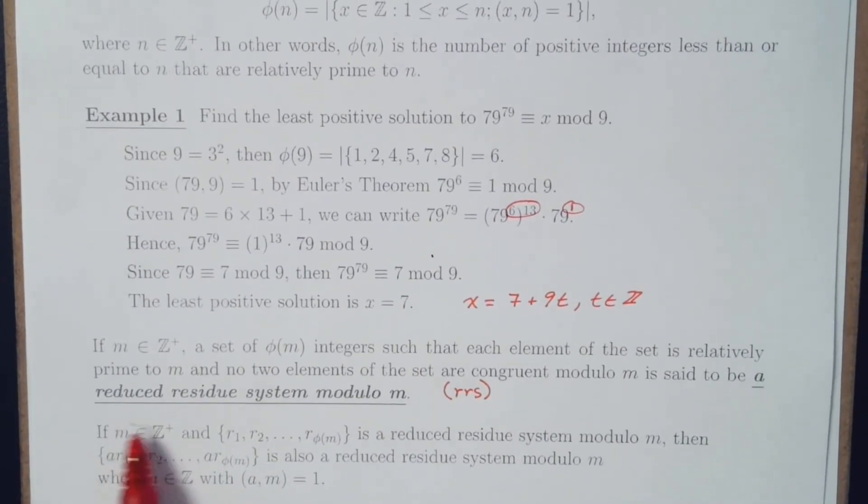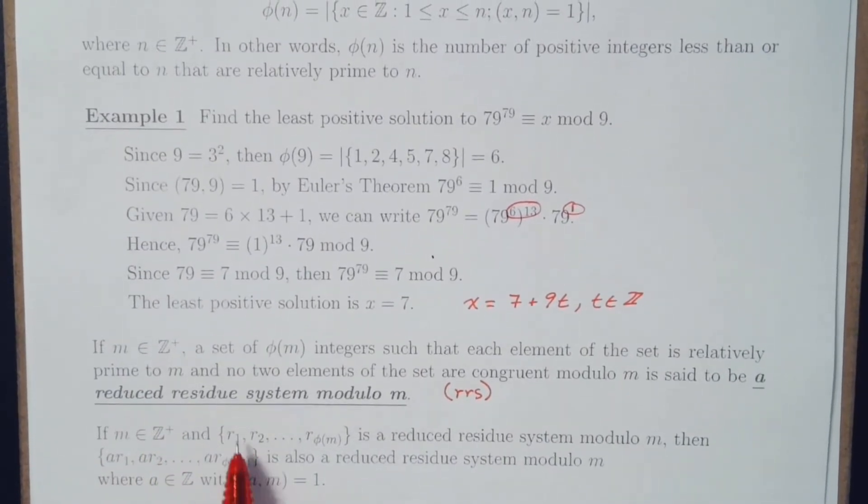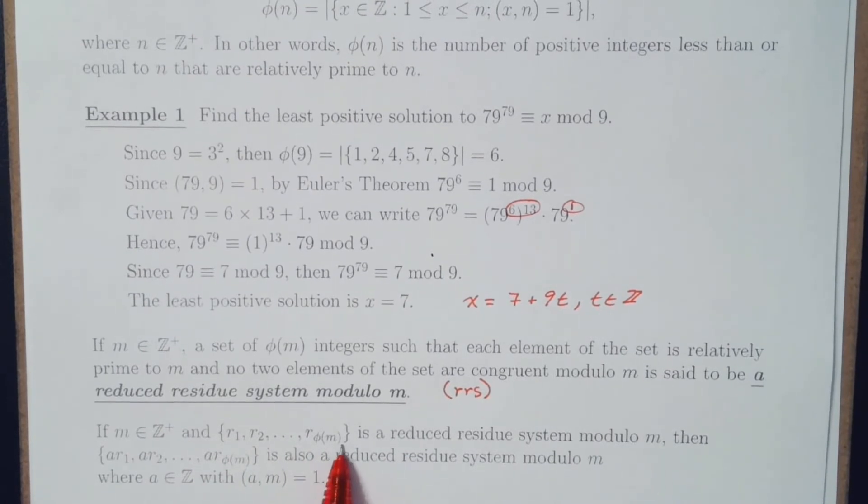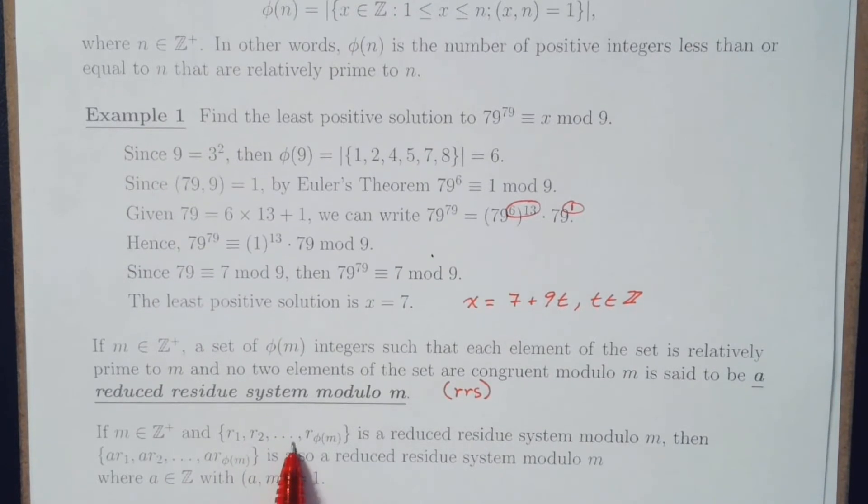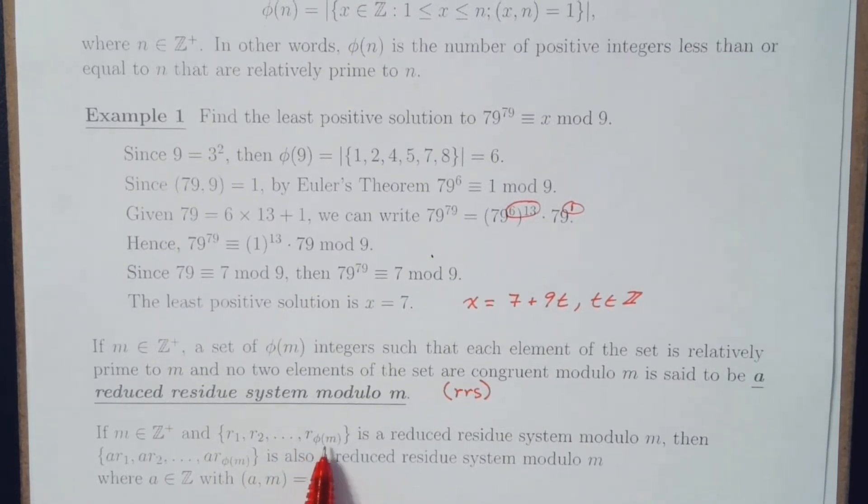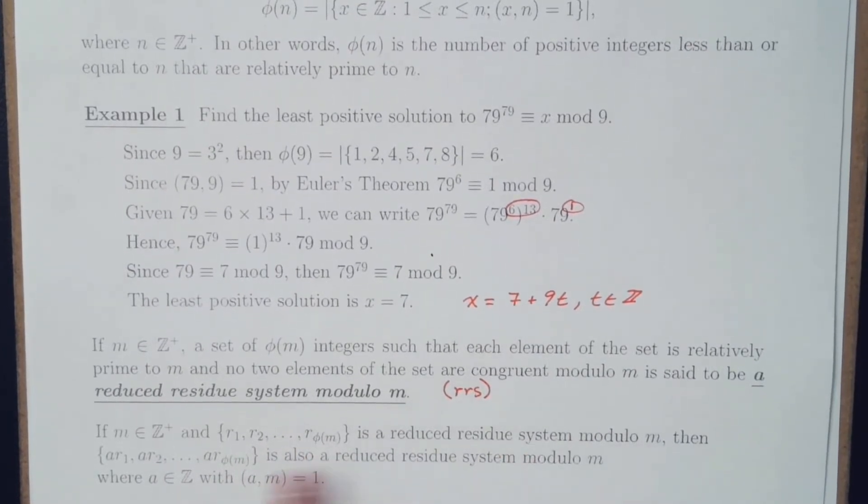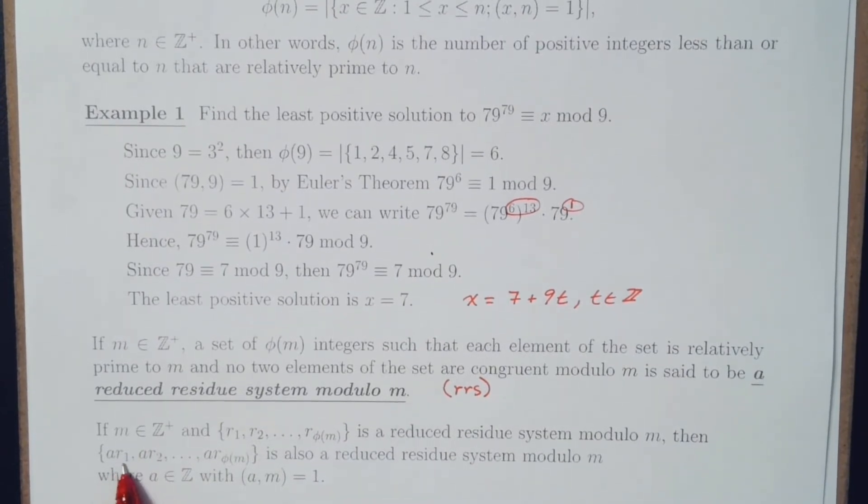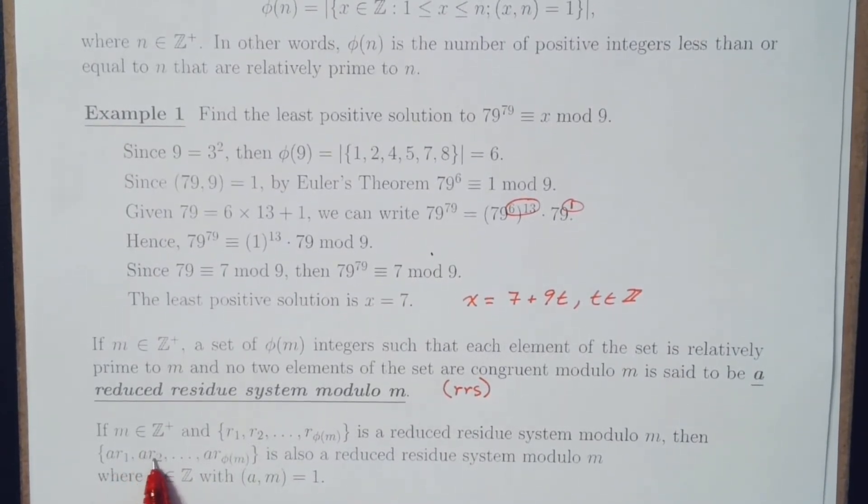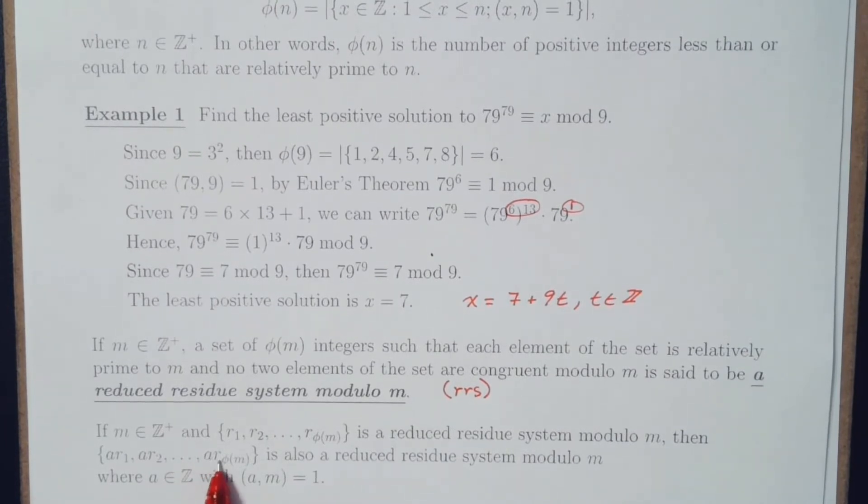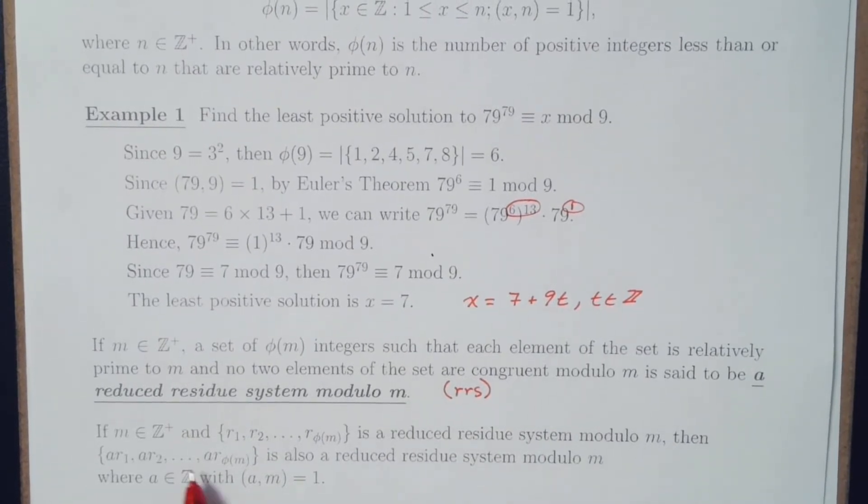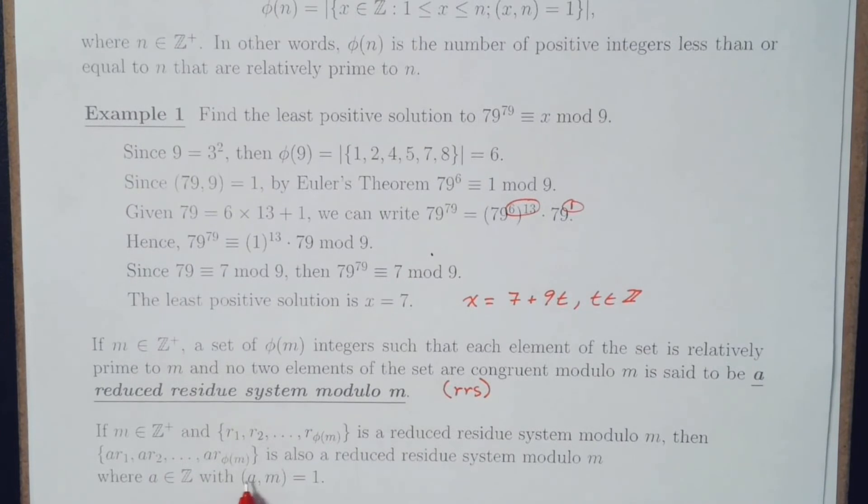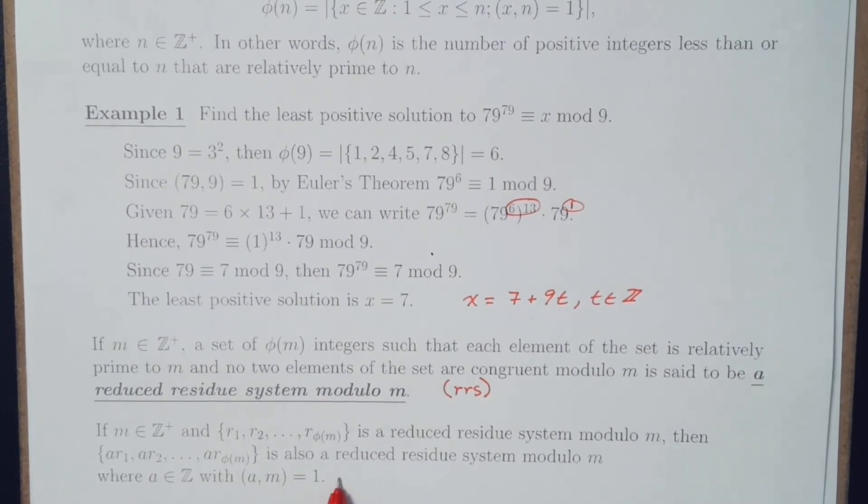Additionally, if m is a positive integer and we have a reduced residue system modulo m, then a times each element is also a reduced residue system modulo m, where A is an integer and A and M are relatively prime.